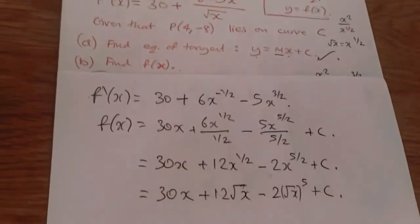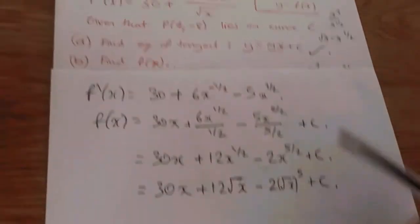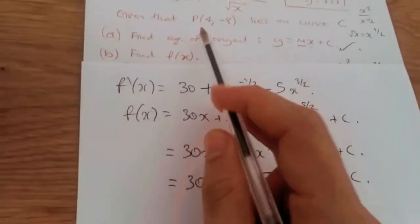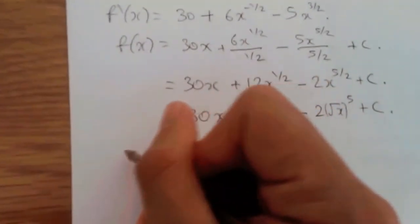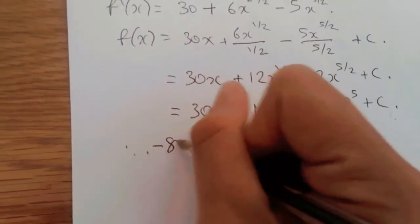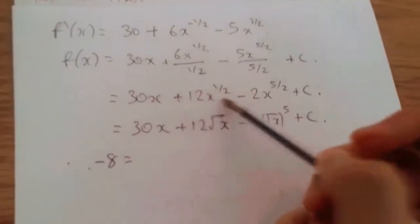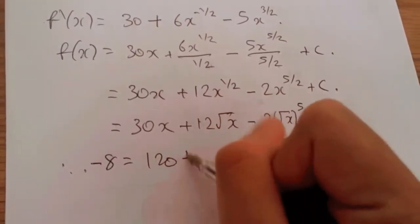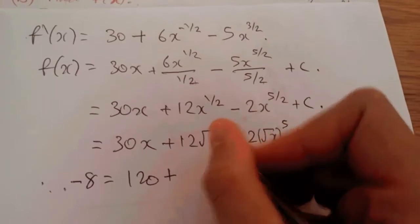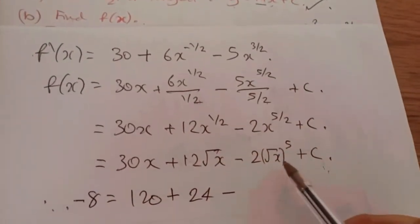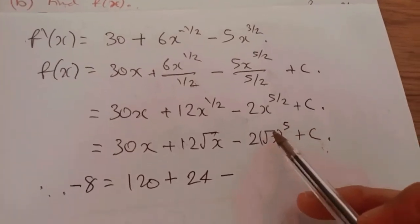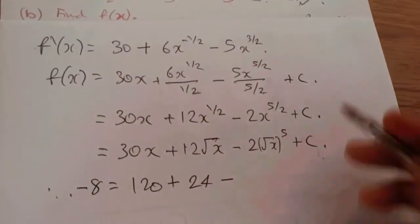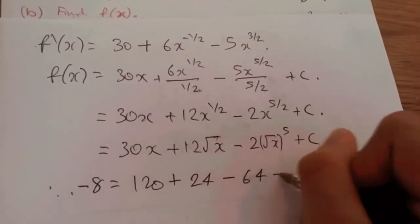Now all we have to do is find out the value of c. And to do this, remember this c is not that c, so not 20. So what we have to do is plug in these coordinates here, and then we get c. So at point P, that means f(x) would be minus 8, so therefore, we're going to have minus 8 equals, and plug in 4 for all of this. We're going to have 30 times 4, which is 120, plus root 4, which is 2, 12 times 2 is 24, minus, okay here we go. Square root of 4 is 2, 2 to the power of 5, so we can get 2, 4, 8, 16, 32. 32, double 32 is 64, and plus c.